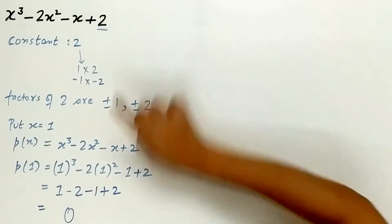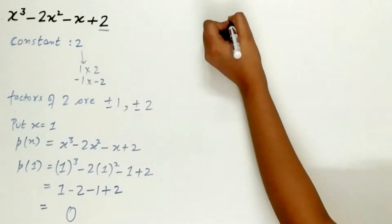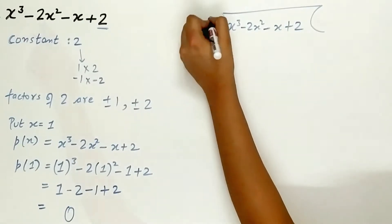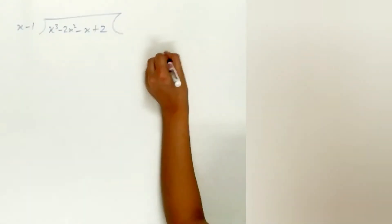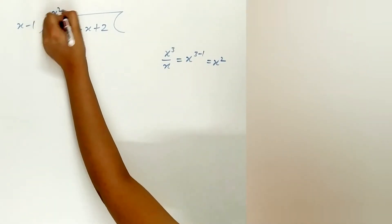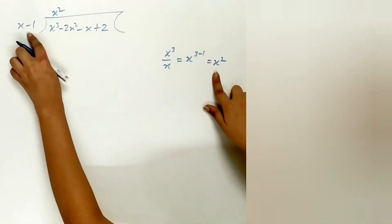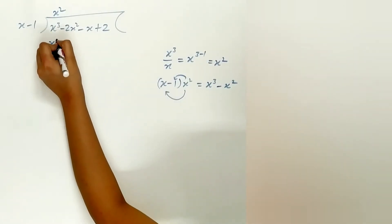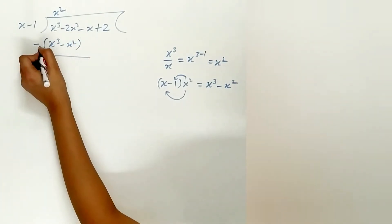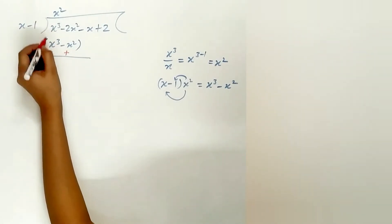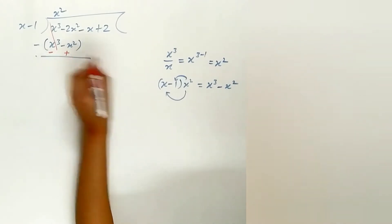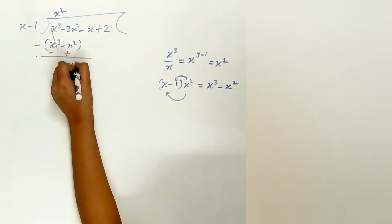To find the remaining factors, divide p(x) by x minus 1. Divide x cube by x, which is equal to x square. Multiply x square by the divisor, then change the sign. x cube minus x cube is 0, and minus 2x square plus x square is minus x square.